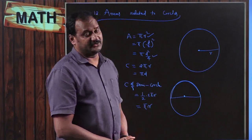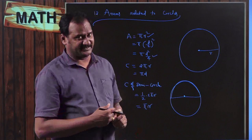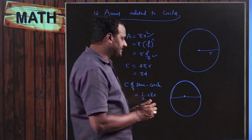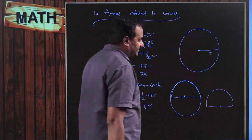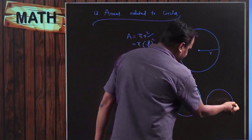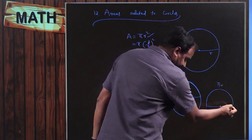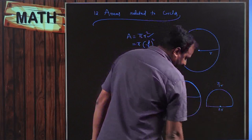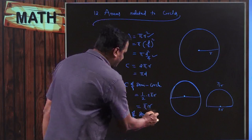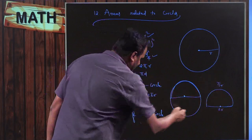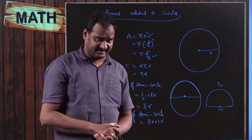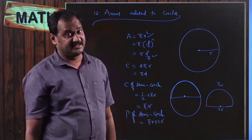There is a small difference between perimeter and circumference of a semicircle. The perimeter of a semicircle means the length of the entire boundary — this includes the curved arc (πr) and also the diameter. Therefore, the perimeter of a semicircle is equal to πr + 2r, or πr + d. Please remember this difference.